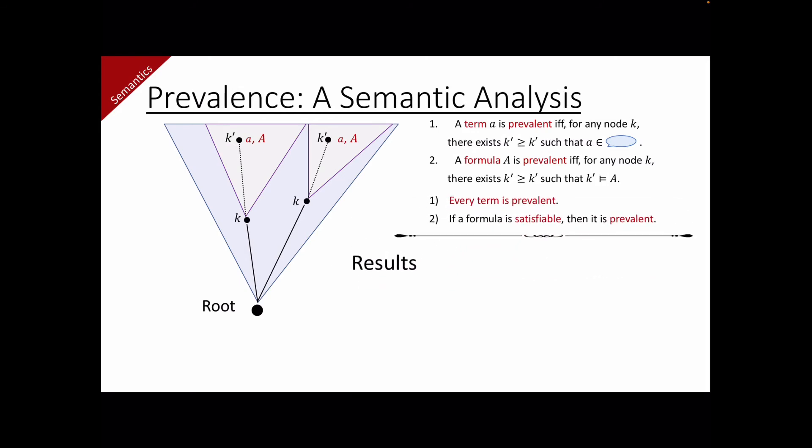But more importantly, one can prove that the following are equivalent. A formula A to B is valid. A to B is prevalent. A is not prevalent or B is prevalent. This means that we can interpret validity of implication as prevalence of implication. And at the level of prevalence, implication behaves as the same as classical implication. This fact is very useful when we prove completeness.